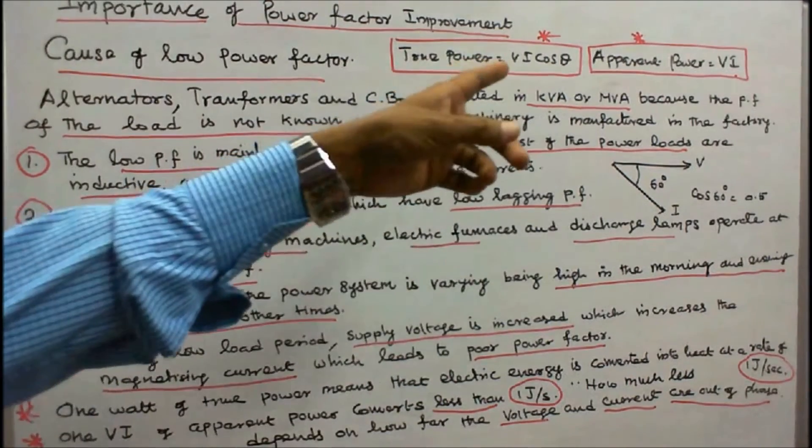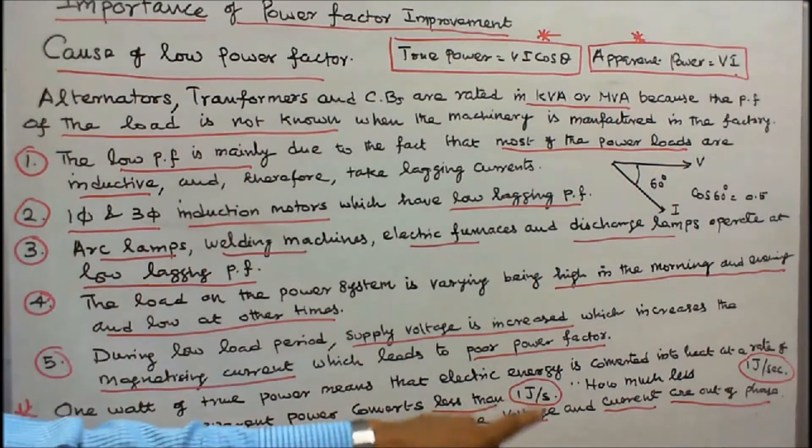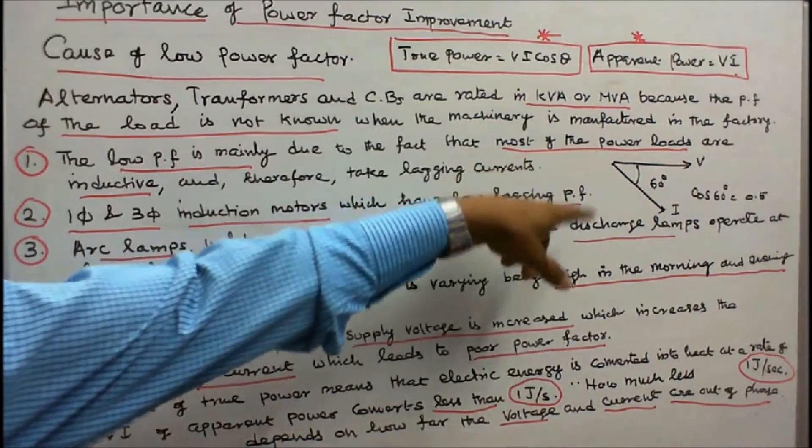Apparent power is equal to V times I. One volt-ampere of apparent power converts less than 1 joule per second. How much less depends on how far the voltage and current are out of phase.